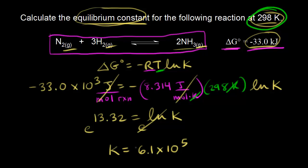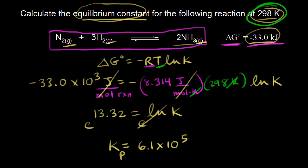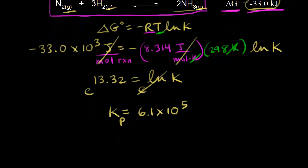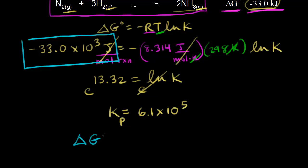E to the 13.32 equals 6.1 times 10 to the fifth. Since we're dealing with gases, you could write this as Kp. So we have an equilibrium constant K much greater than one, obtained from a negative value for delta G zero. When delta G zero is less than zero (negative), our equilibrium constant K is much greater than one. This tells us that at equilibrium, products are favored over reactants — the equilibrium mixture contains more products than reactants.